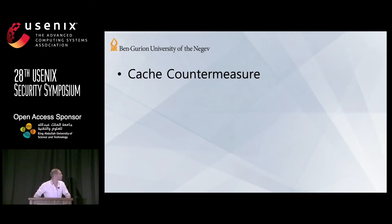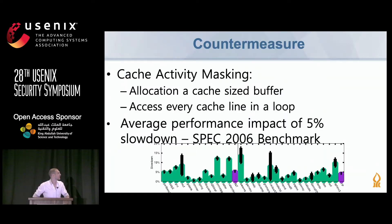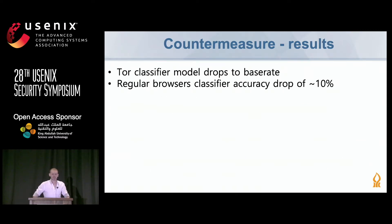For our proposed countermeasure, we used cache activity masking: allocating a cache-sized buffer and accessing every cache line in a loop — similar to the attack itself, but as a defense. It has about a 5% impact on computer performance, which is acceptable compared to regular Tor overhead. Using this countermeasure, Tor classifier accuracy drops to base rate, but regular browsers drop only about 10%, leaving the countermeasure question for regular browsers still open.